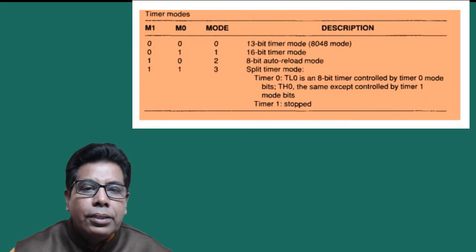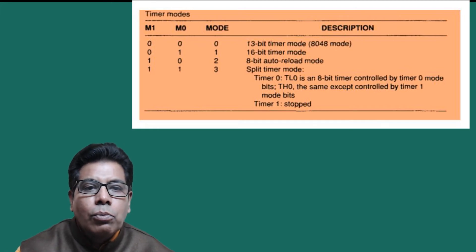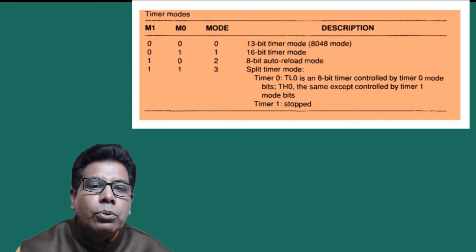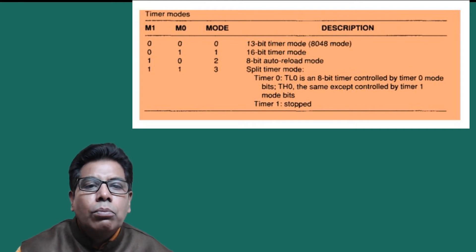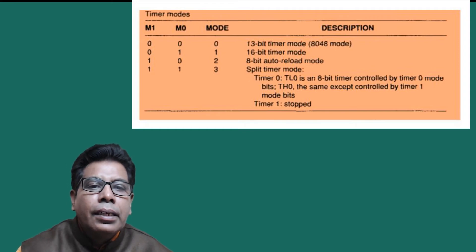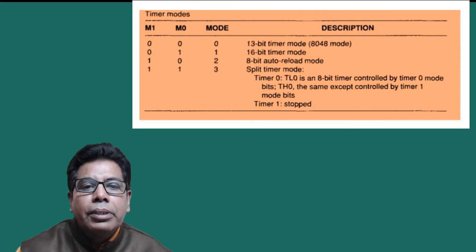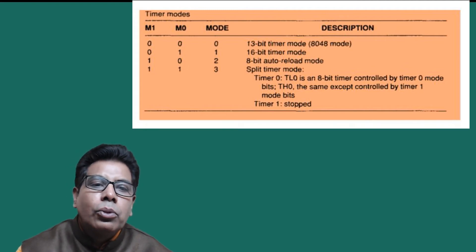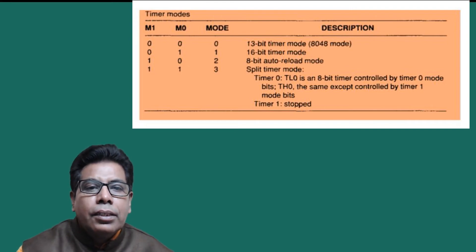The 8051 timer has four modes. When M1 M0 is 00, it is Mode 0 (13-bit timer mode); 01 is Mode 1 (16-bit timer mode); 10 is Mode 2 (8-bit auto reload mode), which we are going to use here; and 11 is Mode 3 (split timer mode).